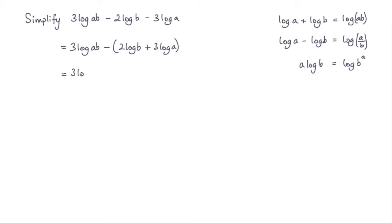Leave this first part again, so 3 log ab minus. And what I'm going to do with each of these is use this rule here. So 2 log b, that would be log b squared. And 3 log a will be log a cubed.